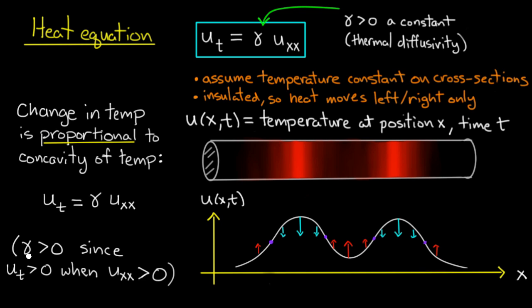Another thing to notice is if gamma is very large, u_t would be much larger in proportion to u_xx. So saying it's the thermal diffusivity is not a bad name, because if it's very large the heat will diffuse very quickly, and if it's very small it'll diffuse more slowly.